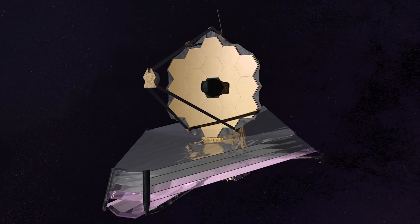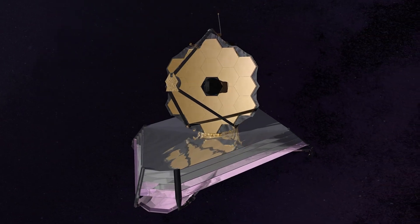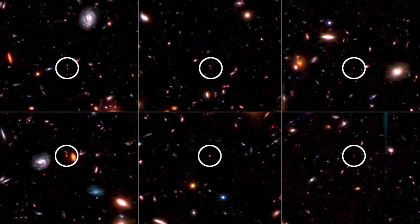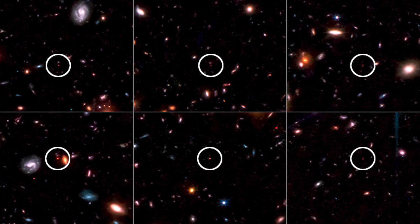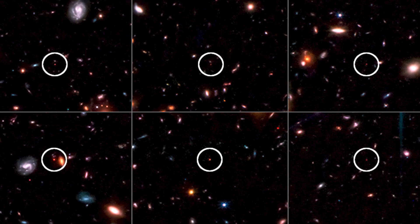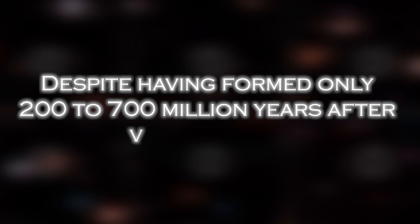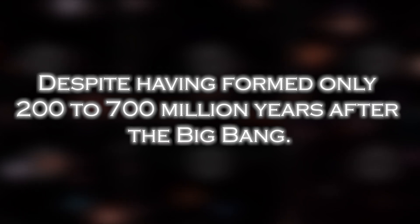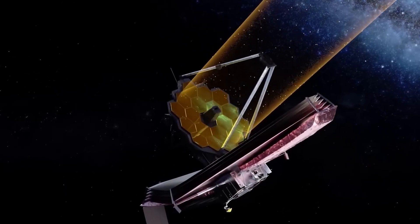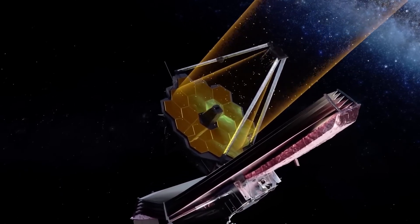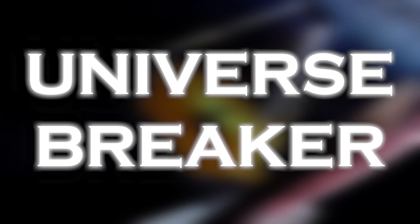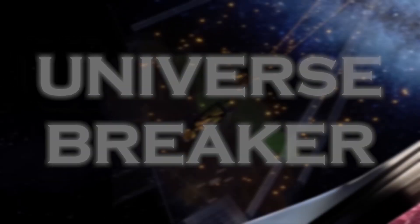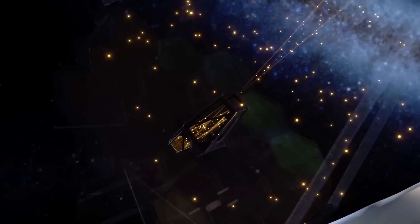The James Webb Space Telescope has revealed the discovery of six massive galaxies dating back to the earliest times of the universe. Each of these galaxies contains more stars than our own Milky Way, despite having formed only 200 to 700 million years after the Big Bang. The team of astronomers who have made the discovery have dubbed these exceptional galaxies universe breakers because, if confirmed, they would revolutionize our entire understanding of the universe.